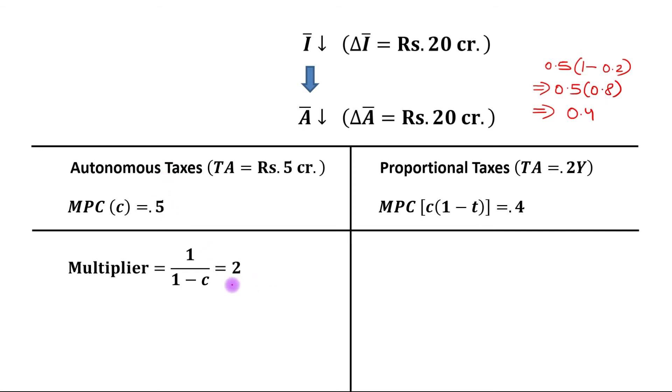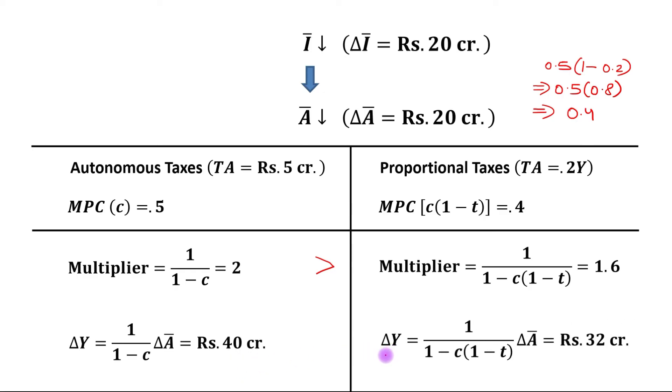The multiplier is 5 in the autonomous tax case. The value of multiplier in case of proportional taxes is less. You can see that the value of multiplier in case of proportional taxes is less. Change in income in case of autonomous taxes is Rs. 40 crore.